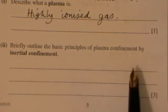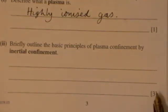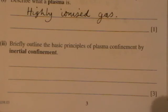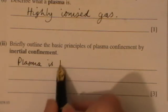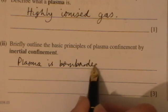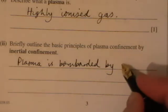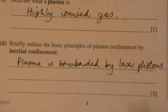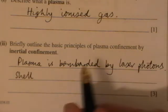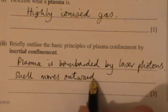Briefly outline the basic principles of plasma confinement by inertial confinement. Three marks for this, so we're looking for three points. In inertial confinement, what happens is that the plasma is bombarded by laser photons. And the shell moves outwards. As a result of that, the shell gets heated up and moves outwards.